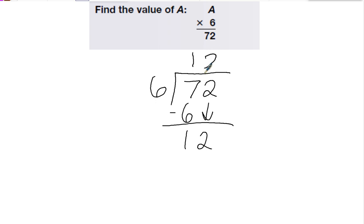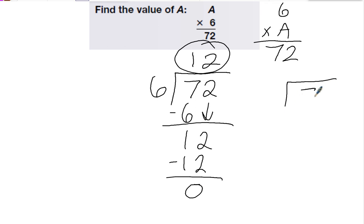6 goes into 12 two times. That's 12, zero left over. So my answer is 12. Now I have multiplication. I can do that even if it's written this way. 6 times A equals 72. I will still divide to find the answer.